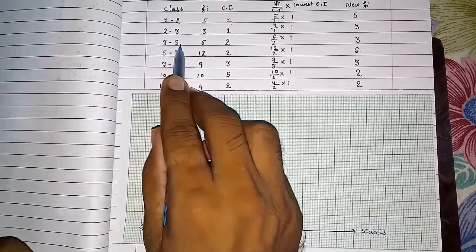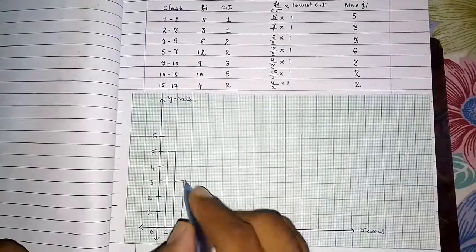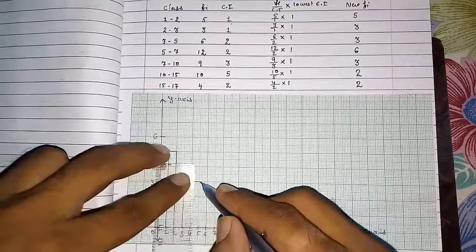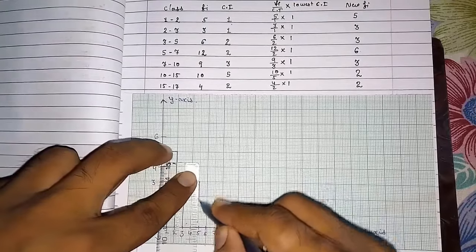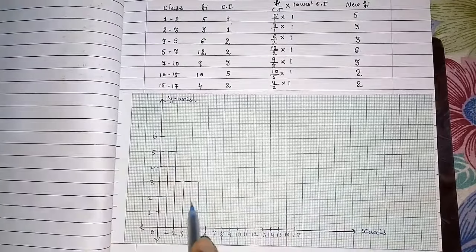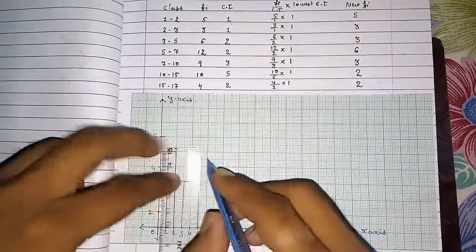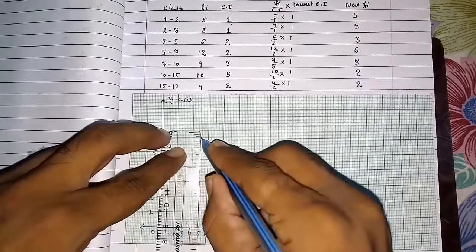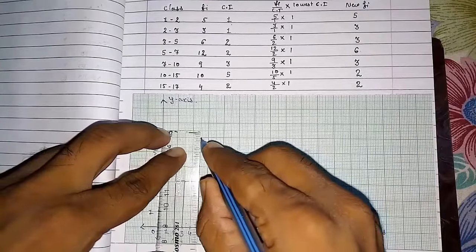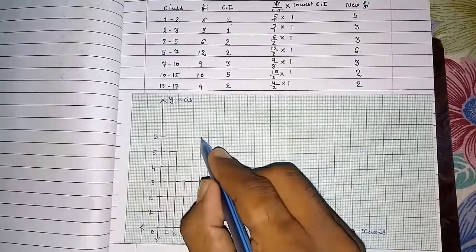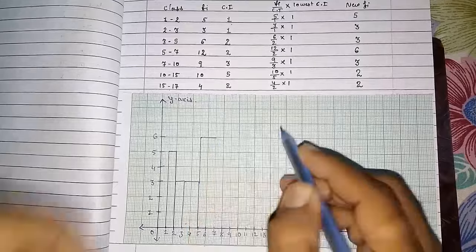Now 3 to 5 and the frequency is 3. So here we have to move up to 5. This is 3 to 5. Then 5 to 7, frequency is 6. So we will go up to 6 and up to 7 we have to move.